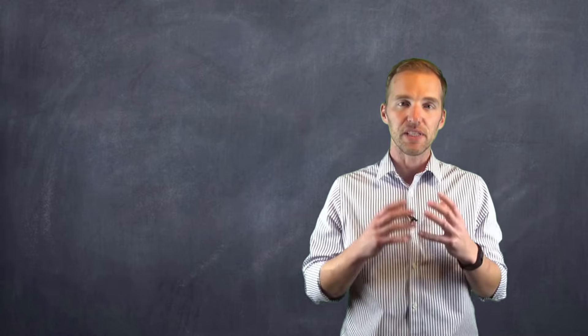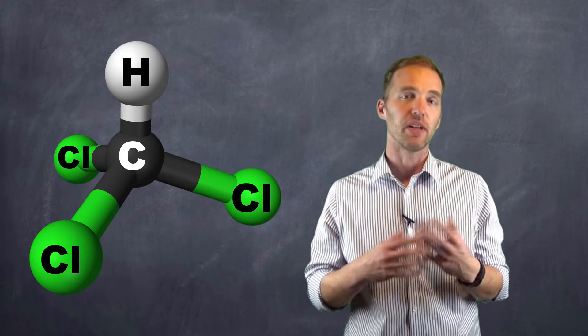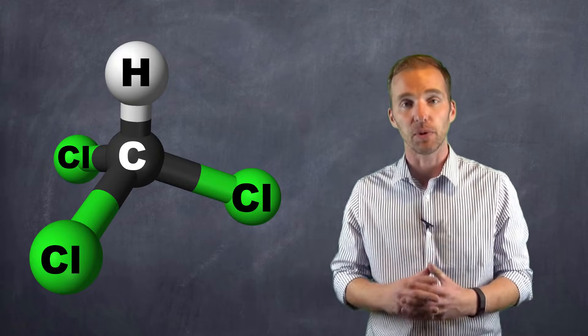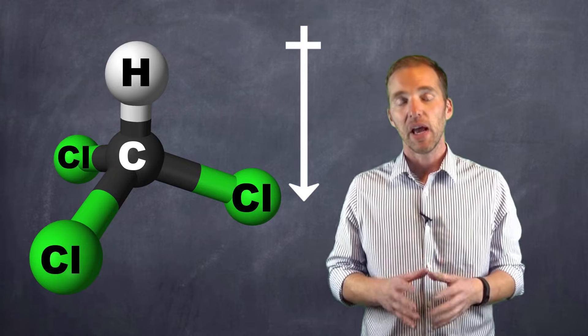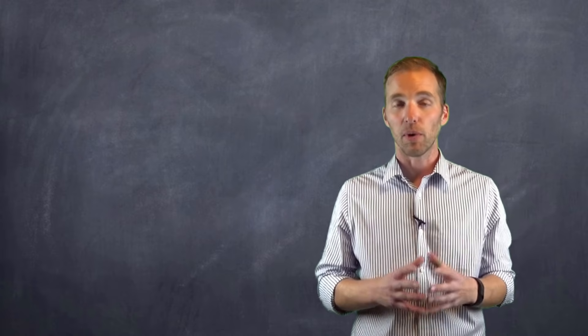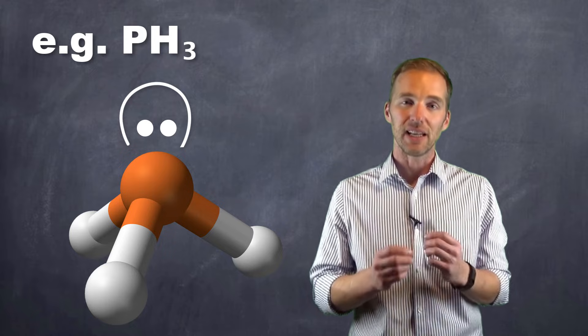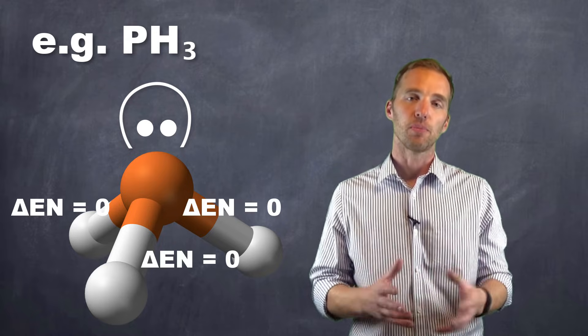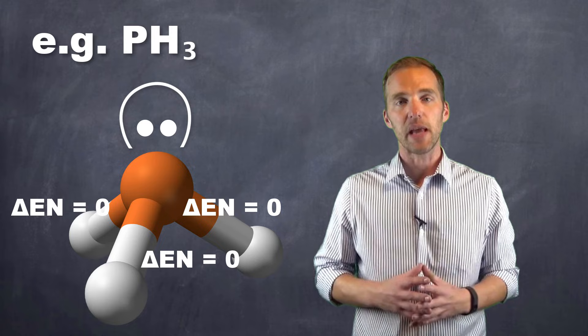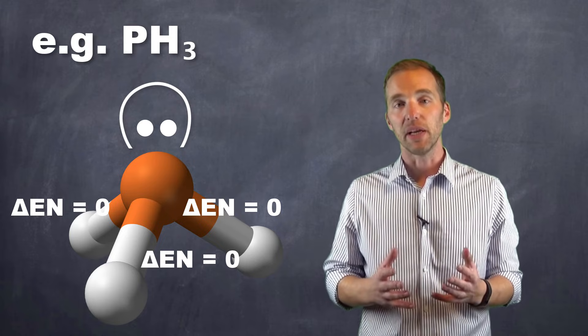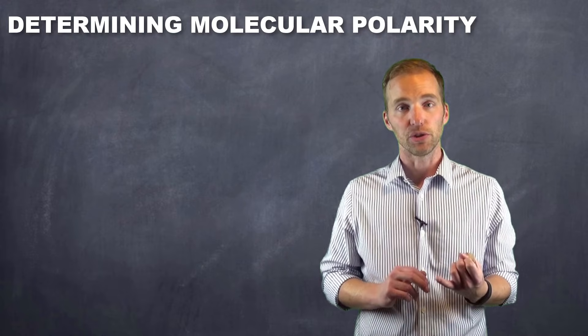It should be noted, though, that if we have different peripheral atoms within a variant shape, that it is certainly possible to have a polar molecule there. And it is possible to have a non-polar molecule variant if the electronegativity difference is quite small. So as we go through drawing this, a good step-by-step procedure would be to first figure out the three-dimensional shape.